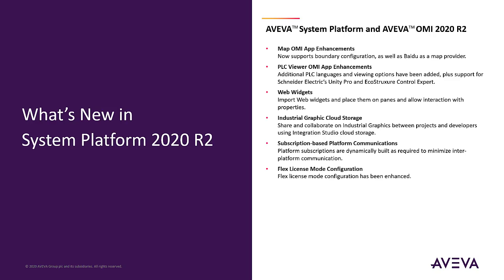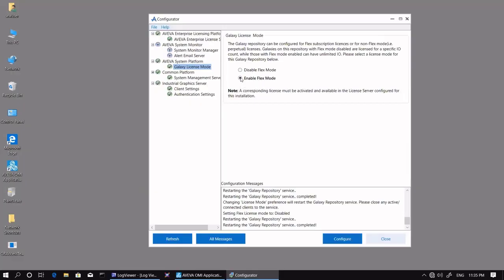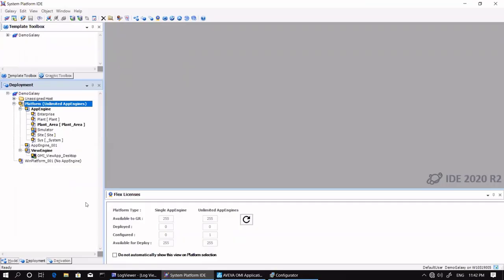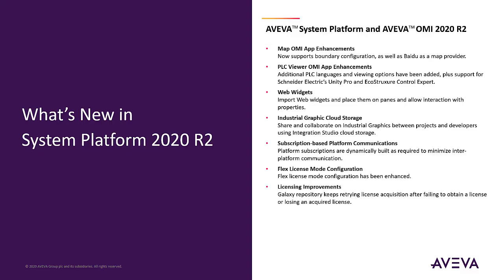Flex License Mode Configuration. Aviva Flex enhancements include a Galaxy License Mode, activating a new Flex Licenses View panel to review license entitlements granted by subscription licensing. Additional licensing improvements allow the Galaxy repository to continue attempting license acquisition after failing or losing an acquired license.